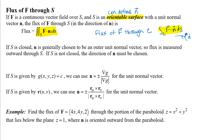We just need to think about how we might set up that integral. When we did the line integrals, for our unit normal vector we used plus or minus T cross K, and depending on the orientation of the curve we chose the plus or minus to establish the correct direction. For flux integrals, we won't be using T cross K — there would really be infinitely many tangent vectors to a surface at a point, so we need to think of some other way to get a normal vector to a surface.